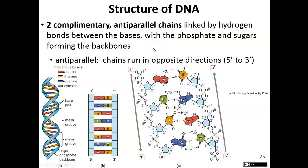DNA is double-stranded, with complementary strands: adenine and thymine always bond together, and guanine and cytosine always bond together. The strands run anti-parallel — one strand runs from 5' to 3', and the other runs from 3' to 5', so they run in opposite directions.